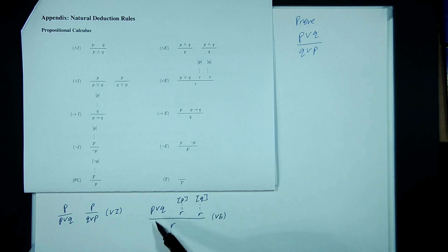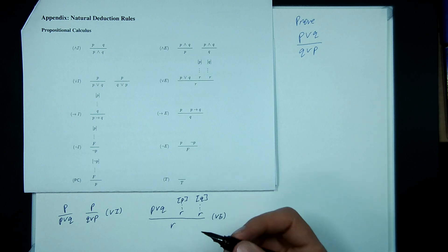The tricky one is OR elimination, which has got two assumption blocks in it. And you can think of OR elimination like a proof by cases.